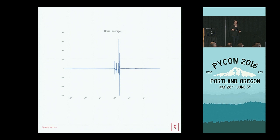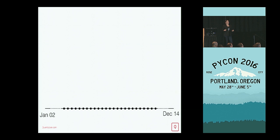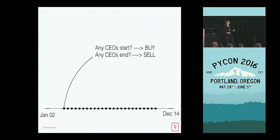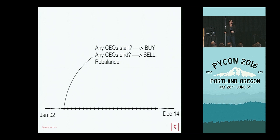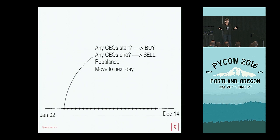What he talked to me about was rebalancing your portfolio and not buying 500 shares of every company, because 500 shares of Berkshire Hathaway is not the same as 500 shares of a penny stock. So the new strategy goes on through history, looks at any female CEOs starting, and puts them on a buy list. It gets any female CEOs that end and puts them on a sell list. It then rebalances my portfolio by looking at how many companies I'm holding, what my portfolio value is, divides the value by the number of companies, and invests the same dollar value per company.